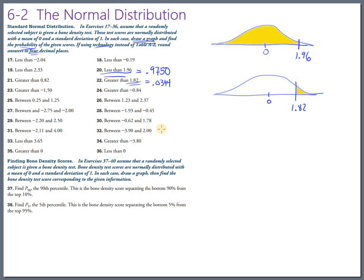So let's do another between. So let's maybe look at 28. Which is between negative 1.93 and negative 0.45. Okay. So picture. Sorry, I should have labeled these. This was number 20. This was number 22. This will be number 28.